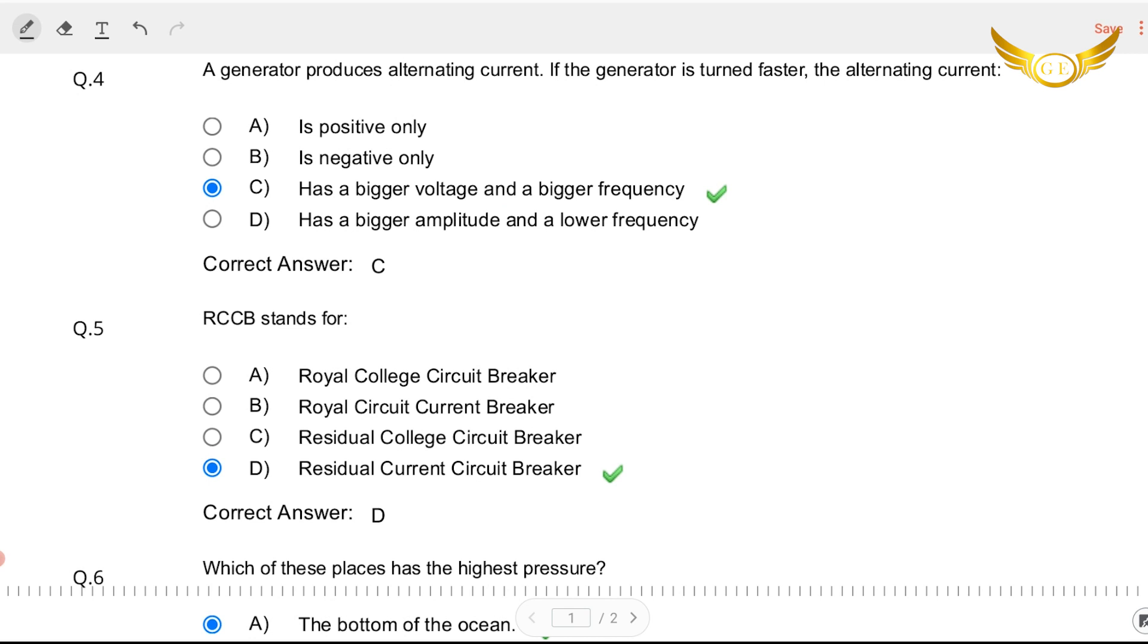The next one. The generator produces alternating current. If the generator is turned faster the alternating current, well this was in the previous question paper as well. So the answer is if it is turned faster it has a bigger voltage and a bigger frequency. So C is the correct answer here.